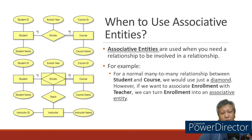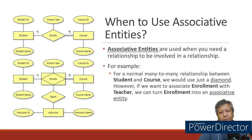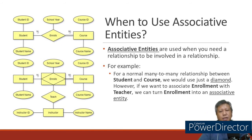When someone enrolls in a course and the 'enrolls' entity exists, only then does the relationship with the instructor come into being. If nobody enrolls in a course, there is no instructor. That concludes our discussion on relationships. We will continue in the next section on generalization, aggregation, and specialization of entity relationship diagrams.